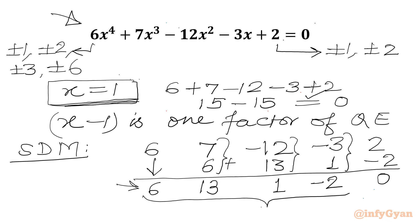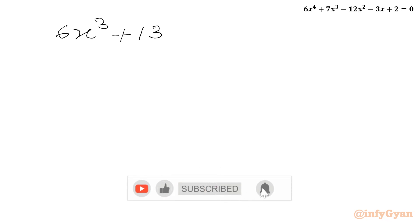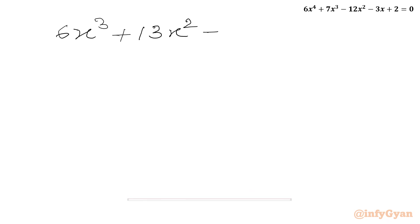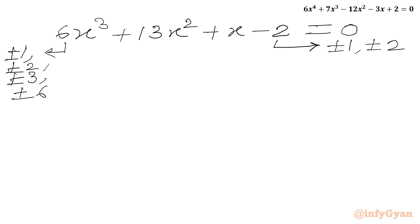These are the coefficients for the cubic equation, so I can write it as 6x³ + 13x² + x − 2 = 0. Again we will find the eligible factors of the constant (±1, ±2) and leading coefficient (±1, ±2, ±3, ±6) and consider their ratios.